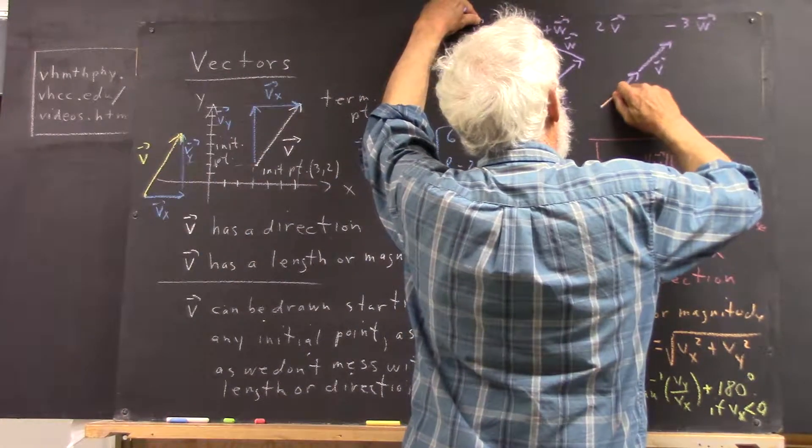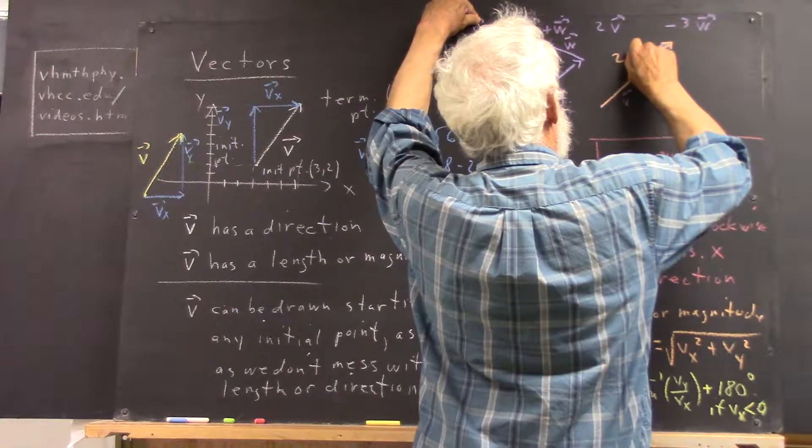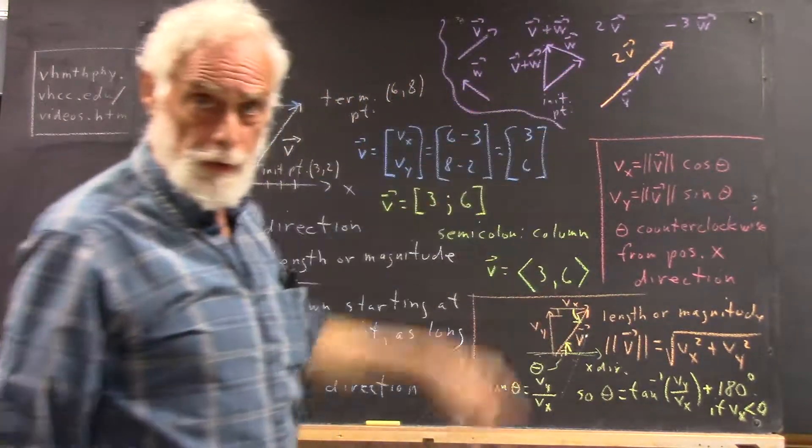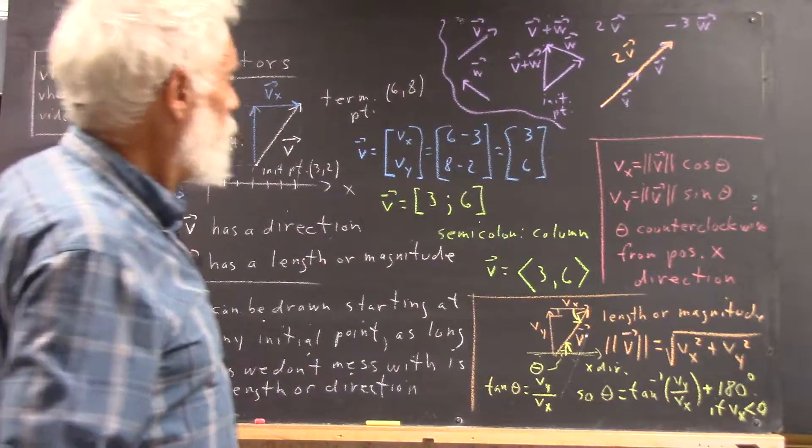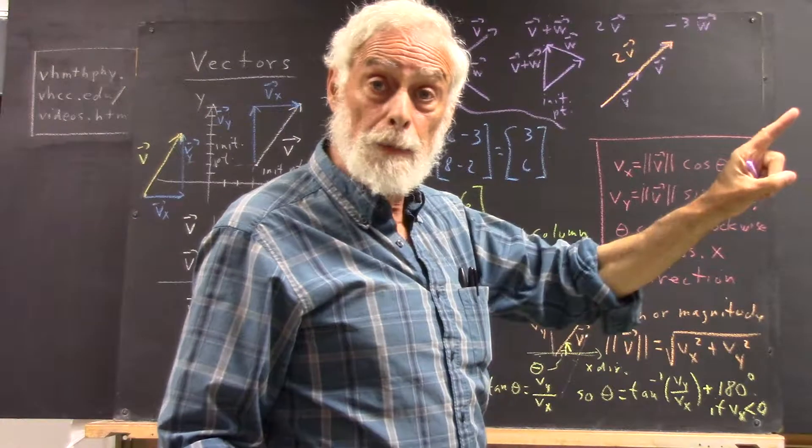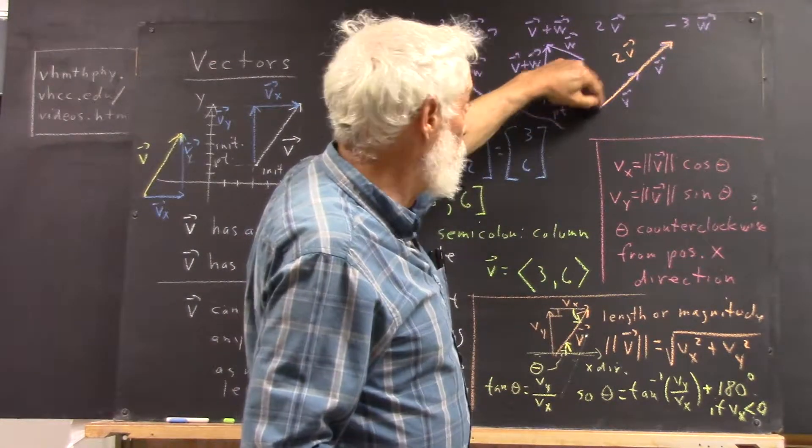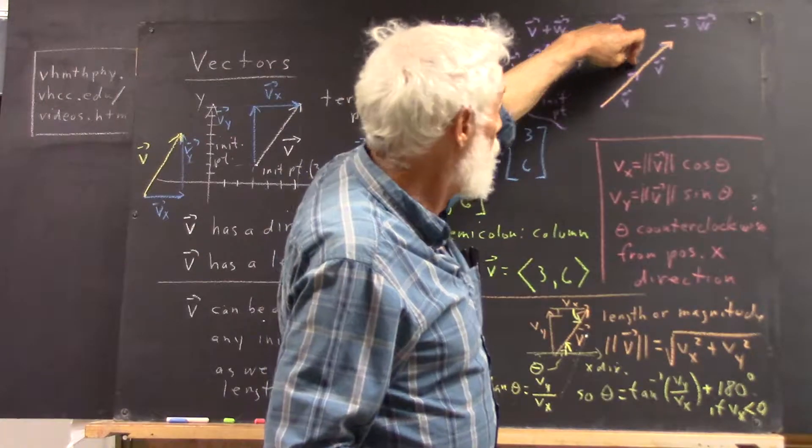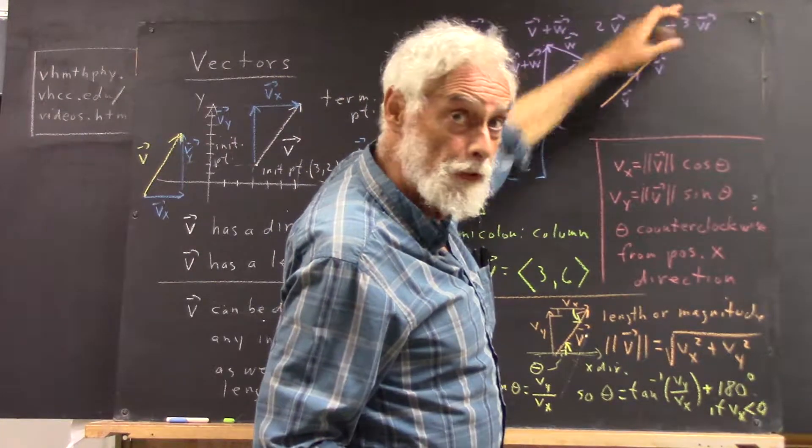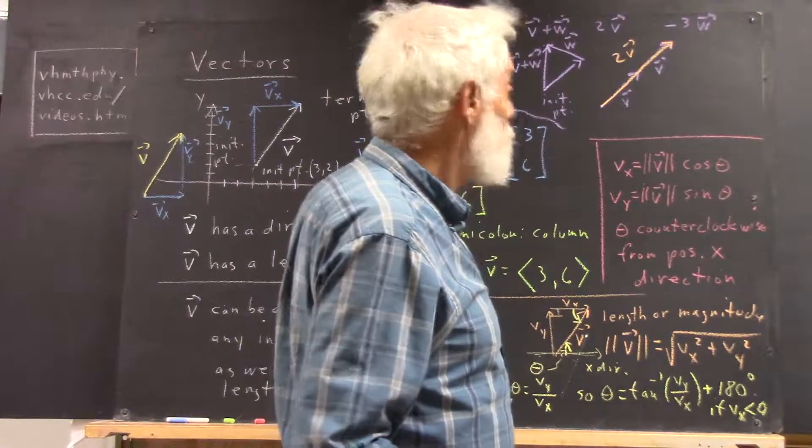So, I can draw that right on top of the two vectors v. Well, that should make some sense. Now, 2v is twice as long as v, but it's in the same direction. Because if I start at an initial point and draw v, and then from there, a terminal point and draw another v, I haven't changed my direction, but my vector's going to be twice as long.